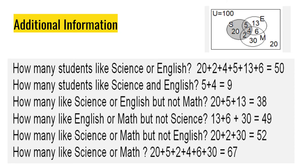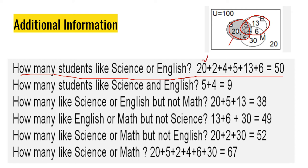For additional information, consider the following example questions. If the question is how many students like English or Science, we look at both the English and Science circles together. The values are 20, 2, 4, 5, 13, and 6, which are equal to 50. When we say 'or,' we include everything in Science and everything in English.